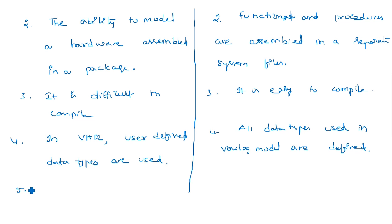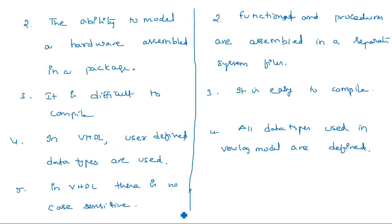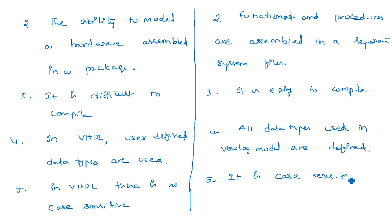The fifth difference is case sensitivity. VHDL is not case sensitive — you can use capital or small letters and it does not change the operation of your code. For example, writing AND gate as 'and', 'AND', or a mix of cases all perform the same task. Verilog, however, is completely case sensitive, so you have to be very cautious when writing small and capital letters.